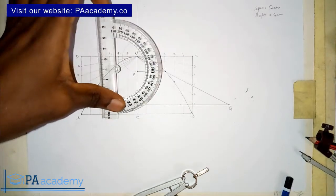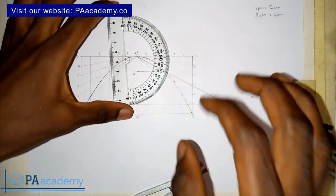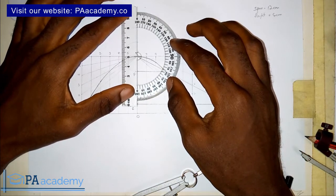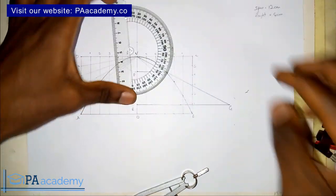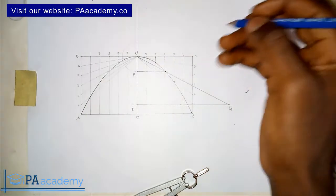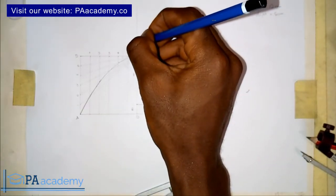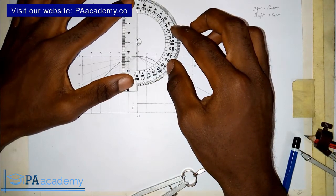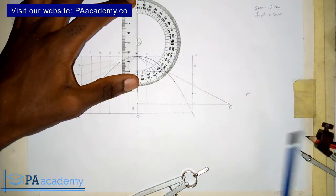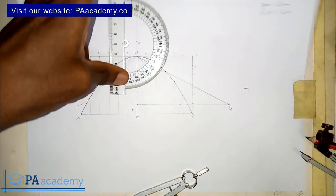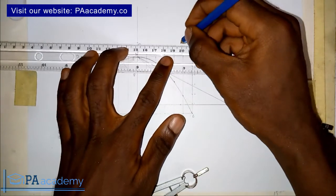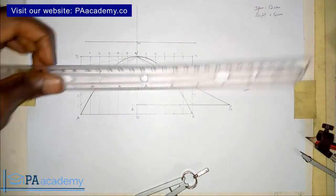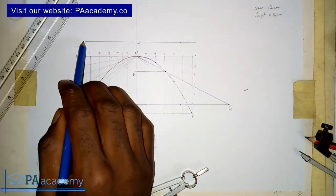We can use a compass or a protractor to get the perpendicular line. I will use the protractor here to reduce the number of construction lines on this drawing, since we will still be using it to draw the tangent and I don't want it to look rough or confusing. So from point M, we draw a line at 90 degrees. This line represents the directrix.